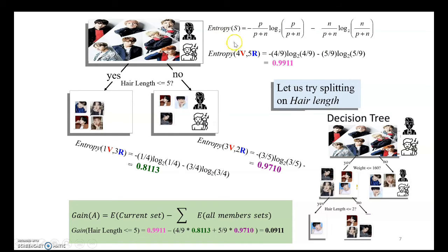The first step is to calculate the entropy of the decision, or the target class. Based on the data, we have four people categorized as vocalist and five people as rapper. We replace these values into the entropy equation. Next, let's consider the first predictive variable: hair length less than or equals 5.